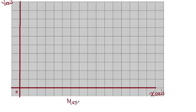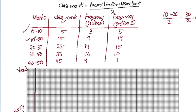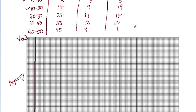On the y-axis we use frequency. Looking at all the frequency values — 3, 9, 17, 12, 9, 5, 19, 15, 10, 1 — the maximum is 19. We set the scale so that 1 unit equals 2 students.